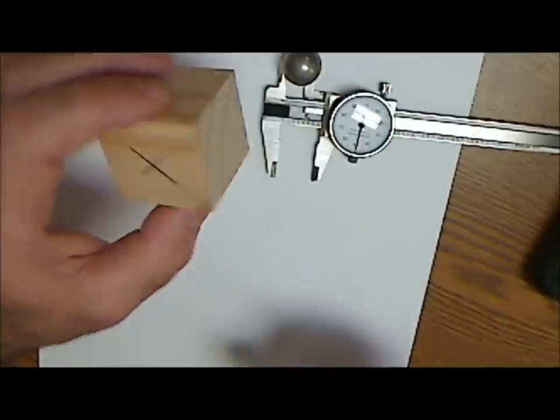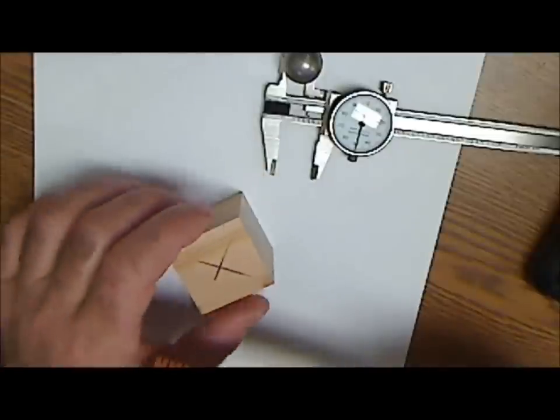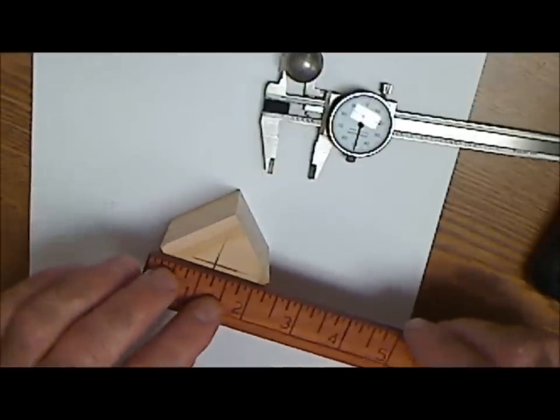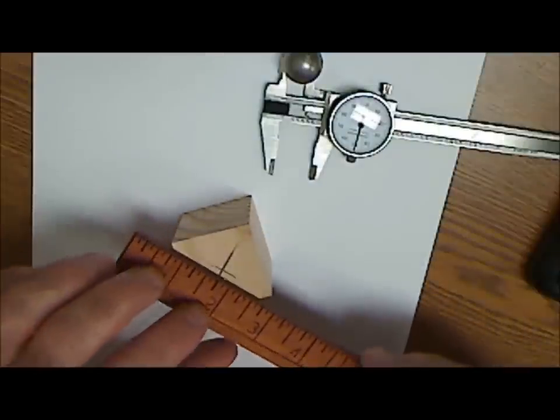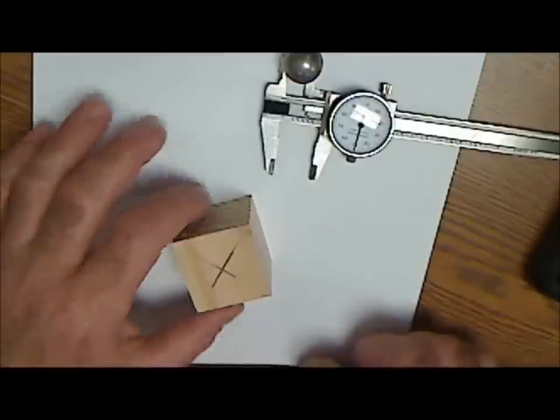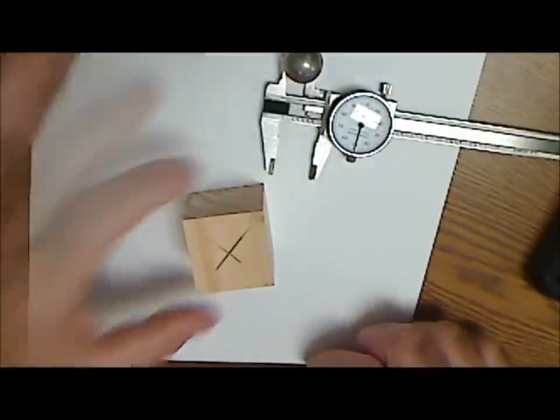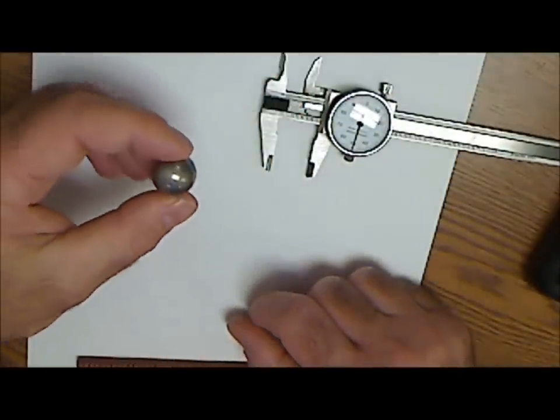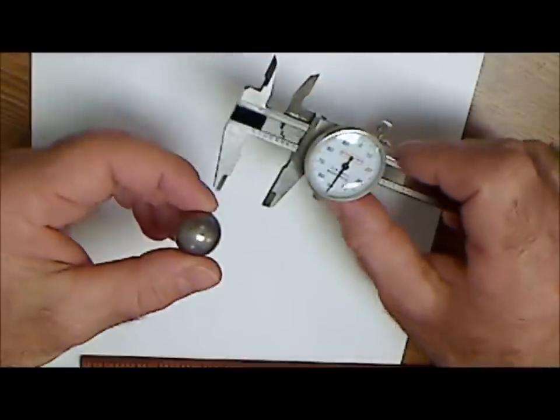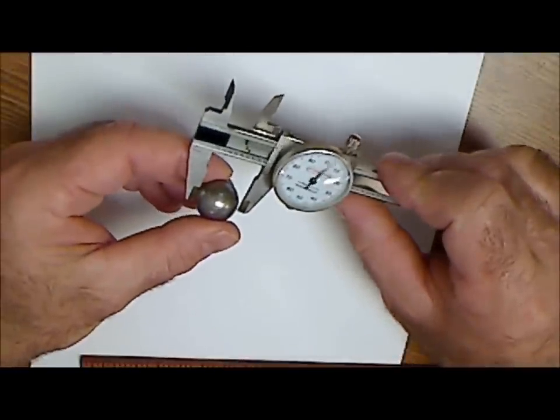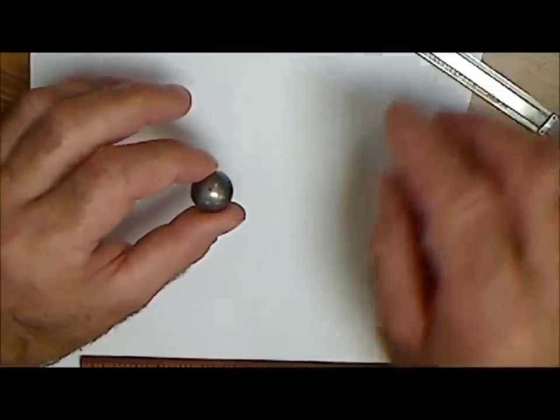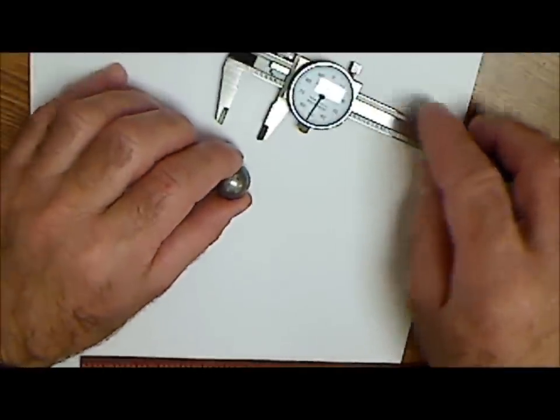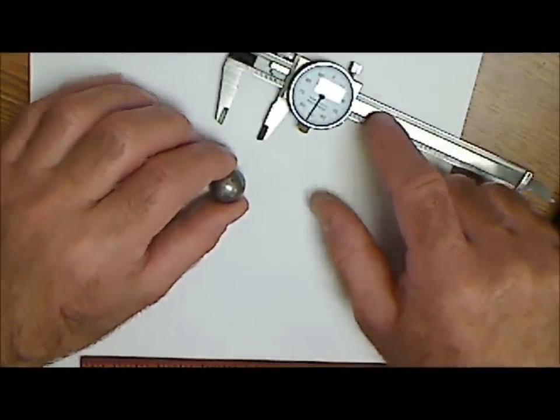After I have my one and a half inch cube, I draw a hypotenuse in this right triangle, hypotenuse in this right triangle, and that gives me the center spot on my block. Then you need to find a ball bearing or marble, whatever you could find. I'm going to check the diameter of the ball bearing.